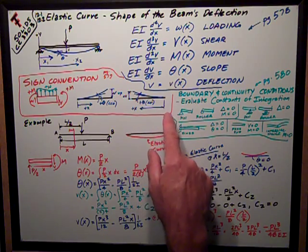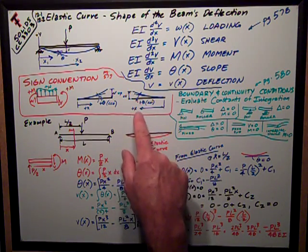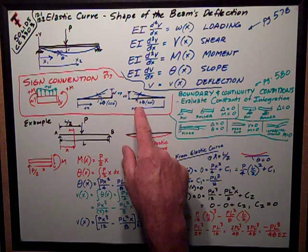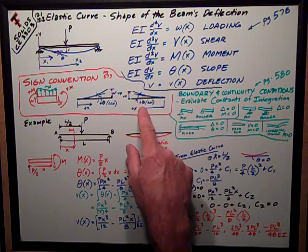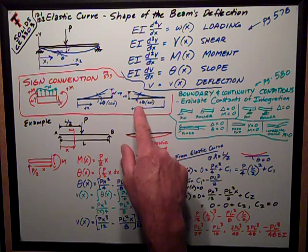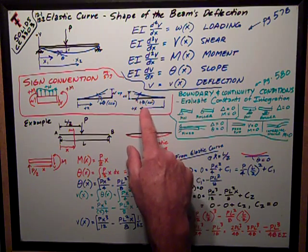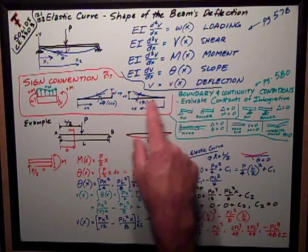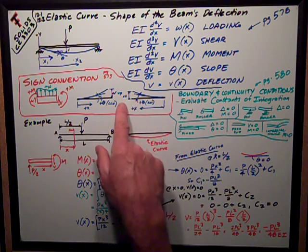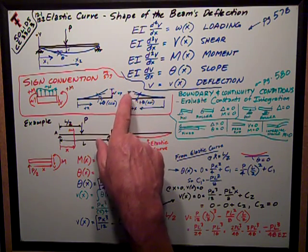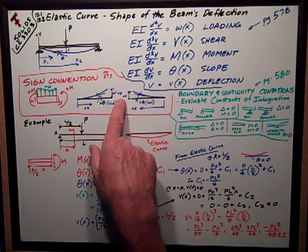If I measure x from the right end of the beam, then my slope changes and I consider positive slope to be clockwise, that direction from the original axis line. And once again, positive deflection v is up.